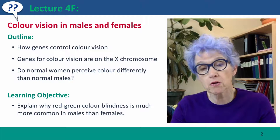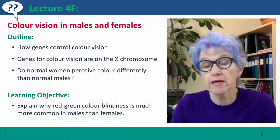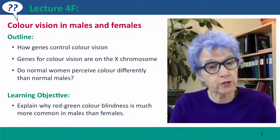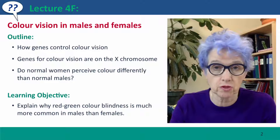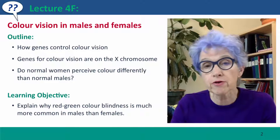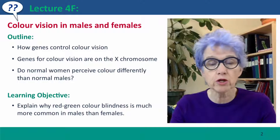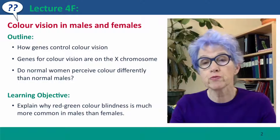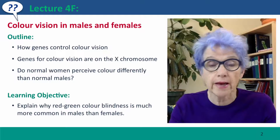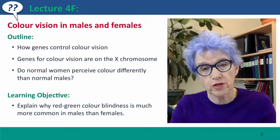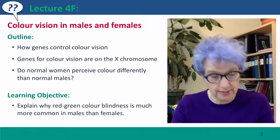We'll talk about how genes control color vision, and then about the particular genes for color vision that are on the X chromosome, and how their evolutionary history makes them particularly prone to mutations that create color vision defects. And we'll end by considering what's the phenotype of women who are heterozygous for these defects.